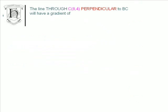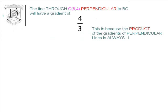Moving on, we see that the line through point C is perpendicular to BC, so we've got to use our knowledge of perpendicular lines. This is going to have a gradient of 4 thirds, and the reason for that is the product of gradients of perpendicular lines is always equal to minus 1. Take the minus 3 quarters, take the reciprocal of it, and change the sign, giving us 4 thirds.